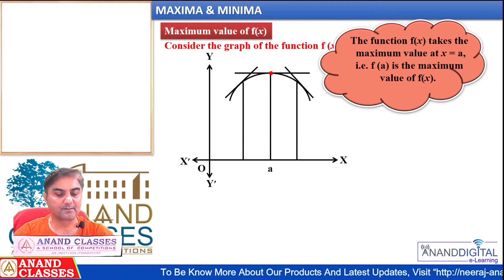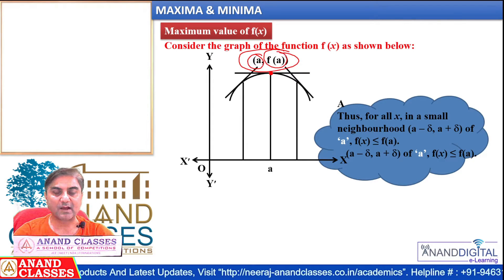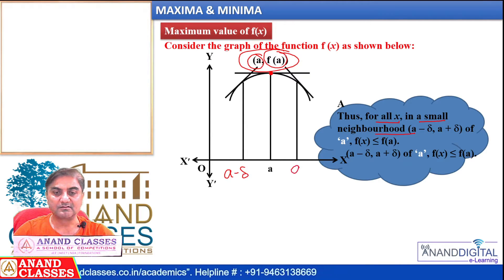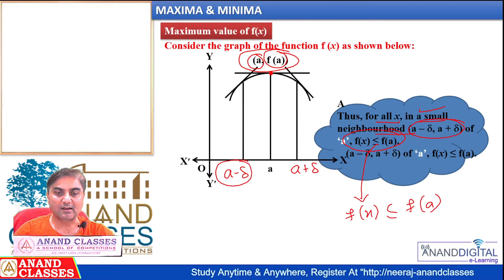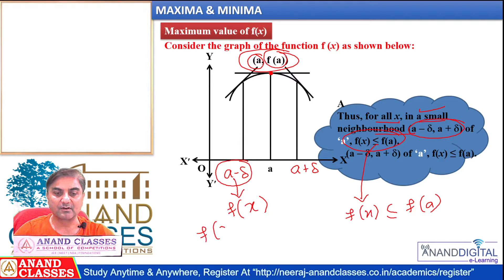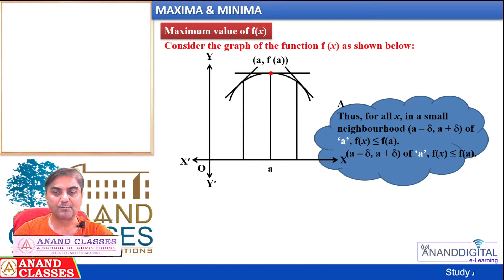At point a, f(a) is its maximum value. For all x in a small neighborhood (a − δ, a + δ), where δ is a very small value, f(x) ≤ f(a). This means if we put a − δ or a + δ into f(x), the values of f(a − δ) and f(a + δ) will be less than f(a). So f(a) is the greatest value — f(x) ≤ f(a) — meaning at point a, f(x) is maximum.